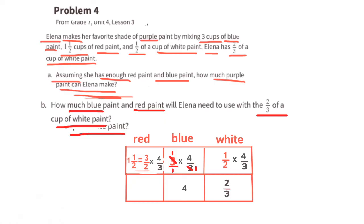That's twelve-sixths or two cups of red paint. So if Elena uses the two-thirds cup of white paint, she would need four cups of blue paint and two cups of red paint.